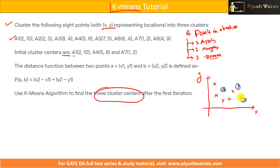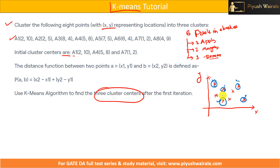Suppose these are the three centroids. How will I know which cluster a particular point belongs to — one, two, or three? I need to find out the distance between that data point and all three centroids. After finding the distances from all three centers, I will select which center is nearest — meaning the distance is minimum. If the distance between a data point and a center is minimum, then that point will belong to that particular cluster.